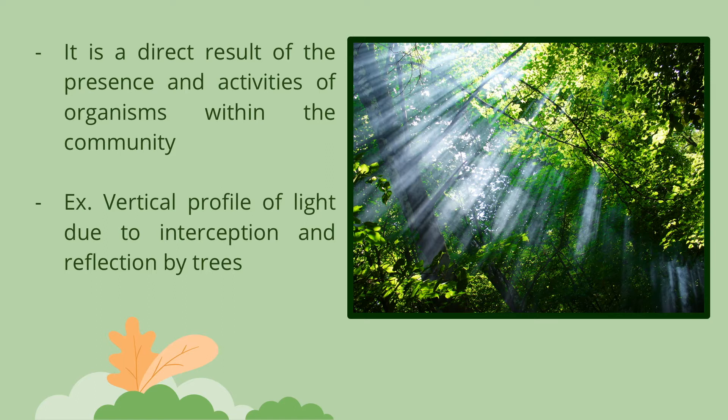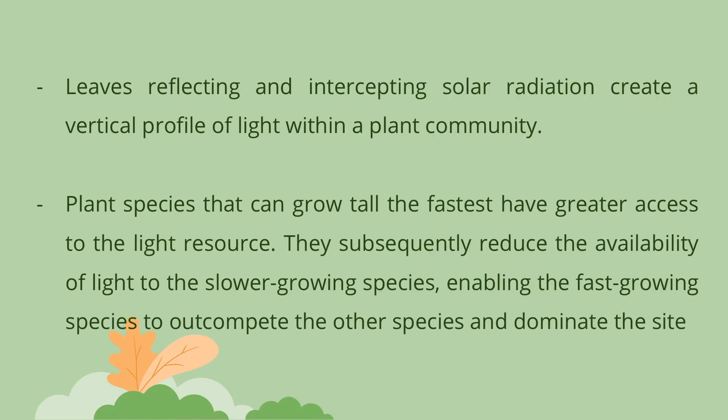In both primary and secondary succession, colonization alters environmental conditions. One clear example is the alteration of the light environment. Leaves reflecting and intercepting solar radiation create a vertical profile of light within a plant community. Plant species that can grow tall the fastest have greater access to the light resource, subsequently reducing the availability of light to slower-growing species, enabling fast-growing species to outcompete and dominate the site. However, in changing the availability of light below the canopy, the dominant species create an environment more suitable for the species that will later displace them as dominants.